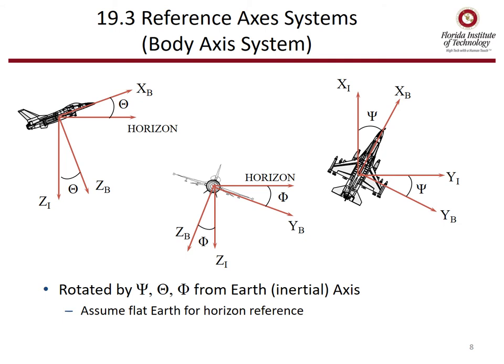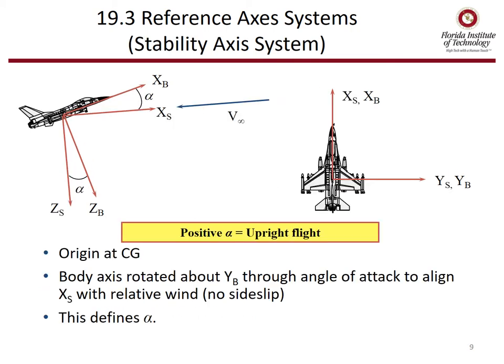We can relate the body axis system to the earth or inertial system using angles psi, theta, and phi, with reference to the earth. We're going to assume that the earth is flat for this purpose. The stability axis system has its origin at the center of gravity and is basically the body axis system rotated through an angle of attack to align with the relative wind.